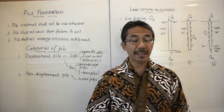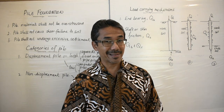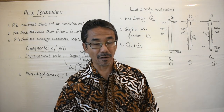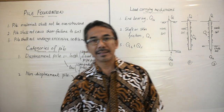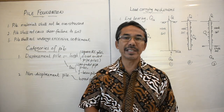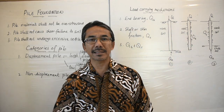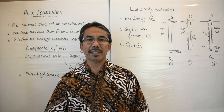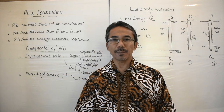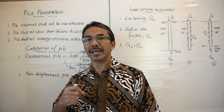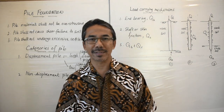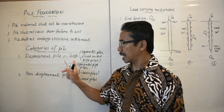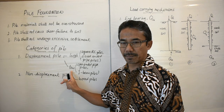Pile can be categorized into two different categories. The first category depends upon the displacement of soil during the installation of the pile. The first category is known as displacement pile and the second category is known as non-displacement pile. Displacement pile can be divided into two different types: high displacement pile and low displacement pile.